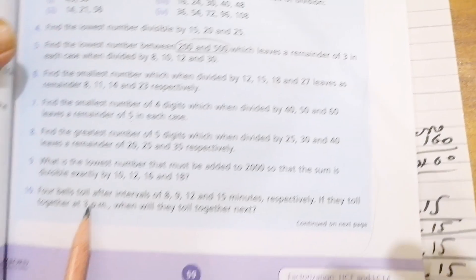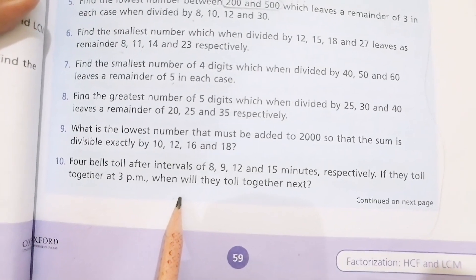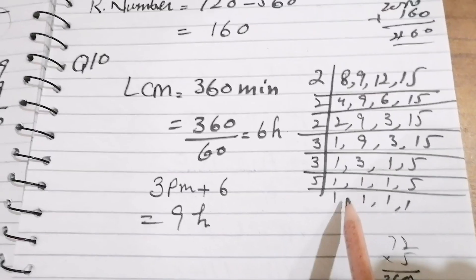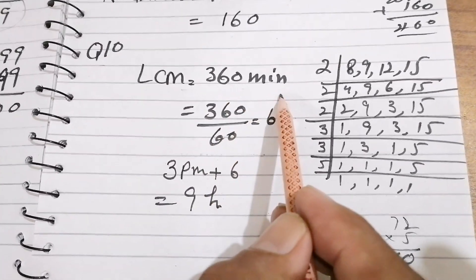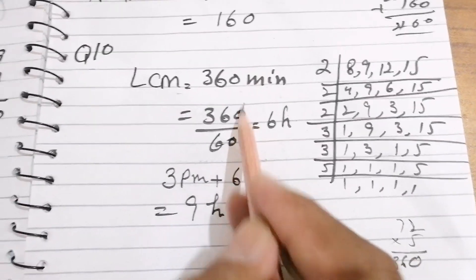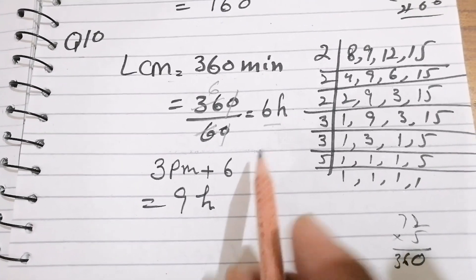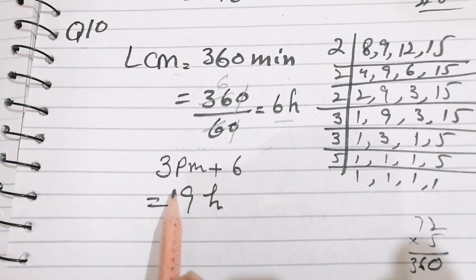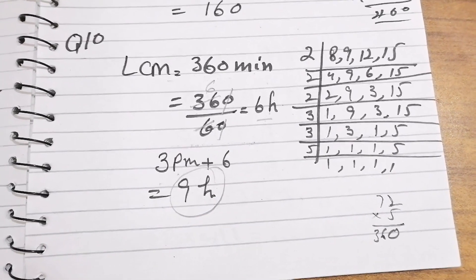Question 10: four bells toll after intervals of 8, 9, 12, and 15 minutes respectively. If they toll together at 3 PM, when will they ring together next? LCM of 8, 9, 12, 15 = 360 minutes. Converting to hours: 360 ÷ 60 = 6 hours. Adding 6 hours to 3 PM gives 9 PM — the bells will ring together again at 9 PM.